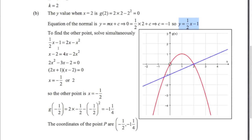To find the other intersection point, we solve simultaneously: one half x minus 1 equals 2x minus x squared. Multiplying by 2 and rearranging gives a quadratic equal to zero. Factorising gives x equals negative one half or x equals 2. We already know x equals 2 is one point, so the other must be x equals negative one half. Substituting negative one half into 2x minus x squared gives y equals minus 1 and a quarter. So the coordinates of point P are (minus one half, minus one and a quarter).